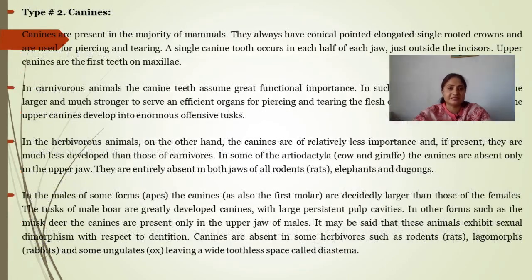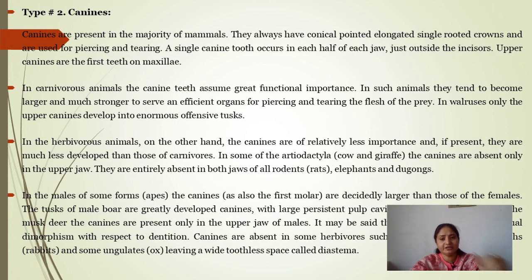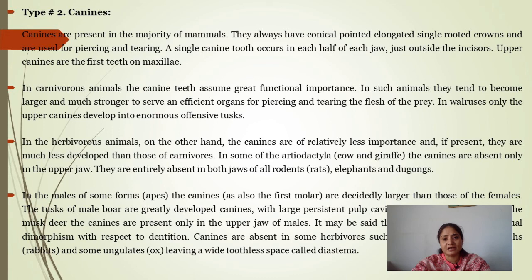After looking at incisors modifications, we look at canines. In mammals, one canine is present per quadrant — the dental formula notation is 3143. Canines are present in the majority of mammals; they always have a conical, pointed, elongated, single-rooted crown and are used for piercing and tearing. A single canine tooth occurs in each half of each jaw, just outside the incisors.